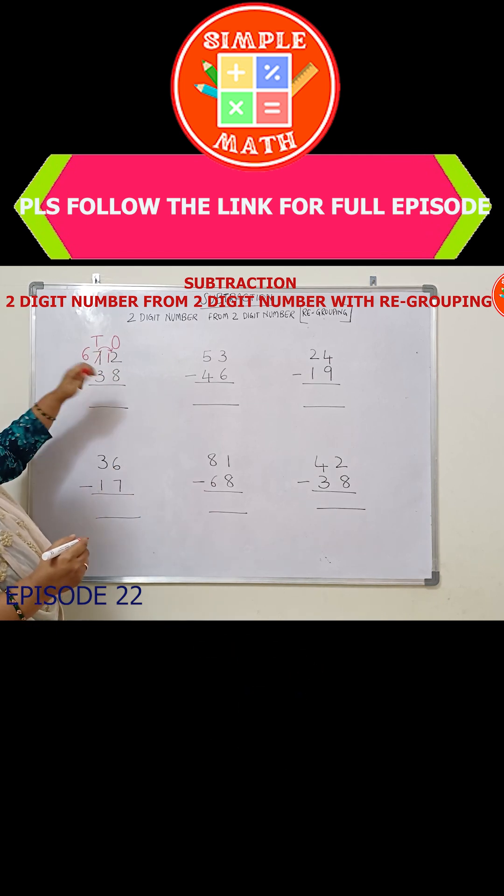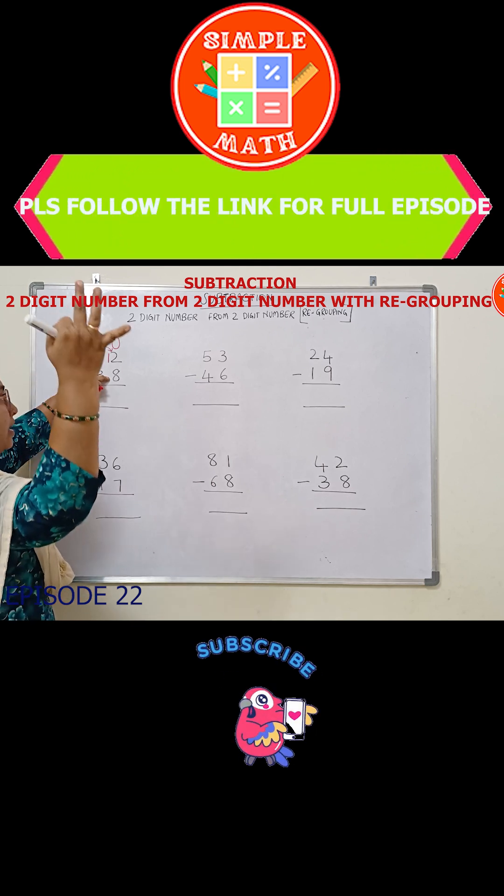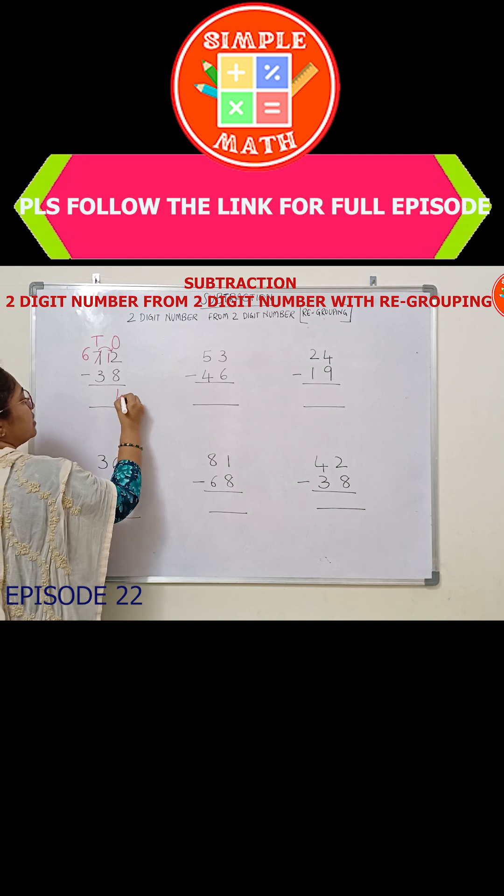Now let's start normal subtraction. Take eight in your mind, count till you get this number. Eight, count after eight, nine, ten, eleven, twelve. So how many fingers did you get? One, two, three, four. So now you write the number here as four.